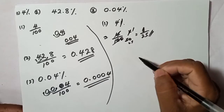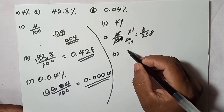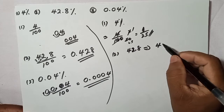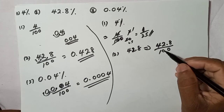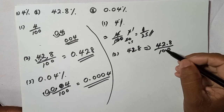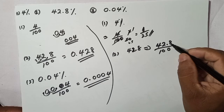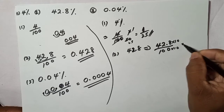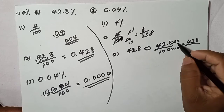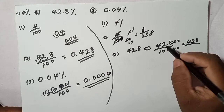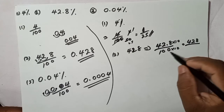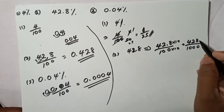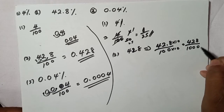For 42.8% as a fraction: write 42.8 over 100. The problem is the decimal in the numerator. Since there is one digit after the decimal point, multiply both numerator and denominator by 10. That gives 428 over 1000. You can simplify further if needed.